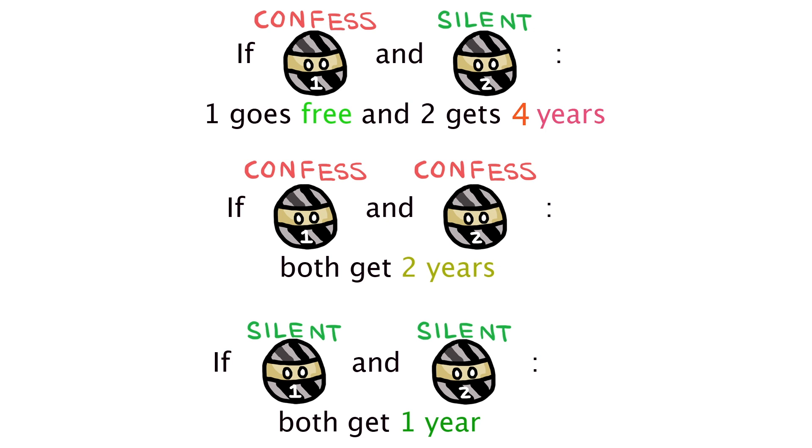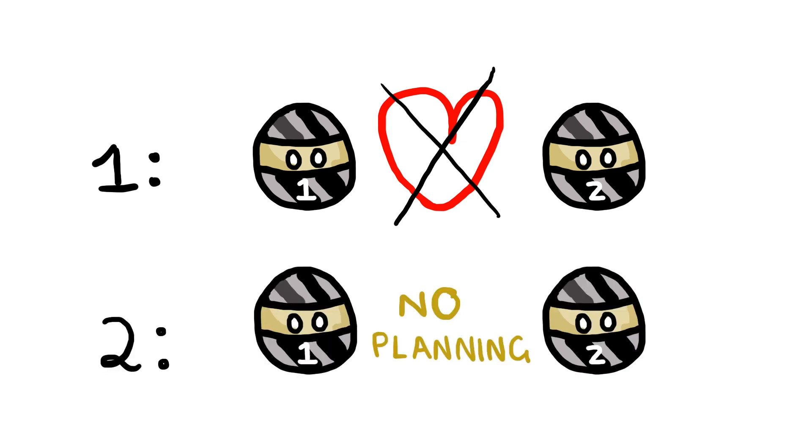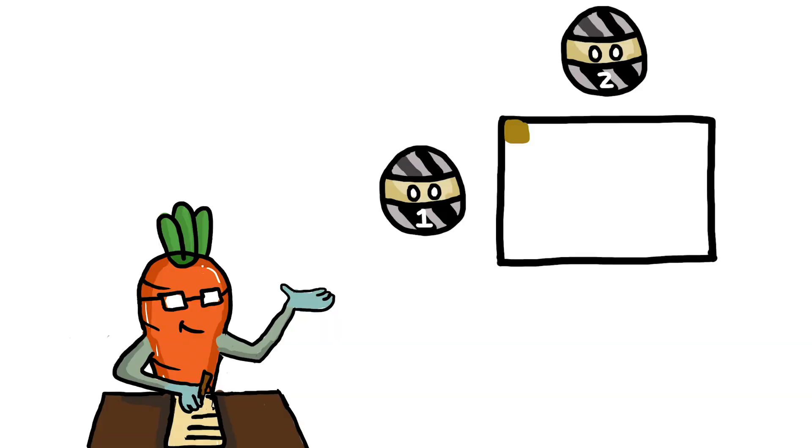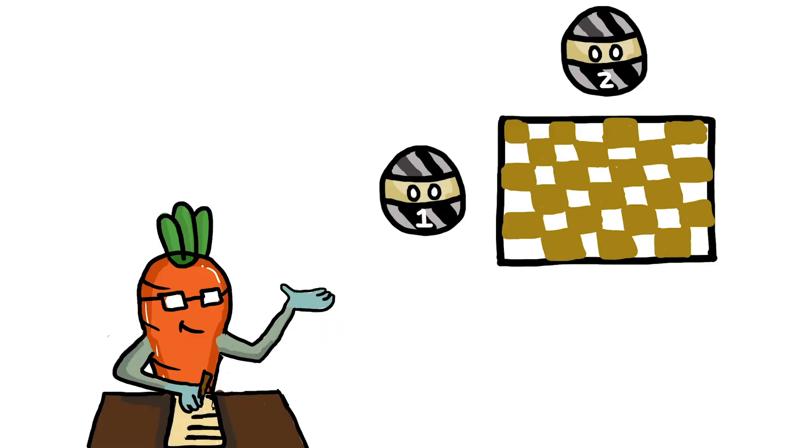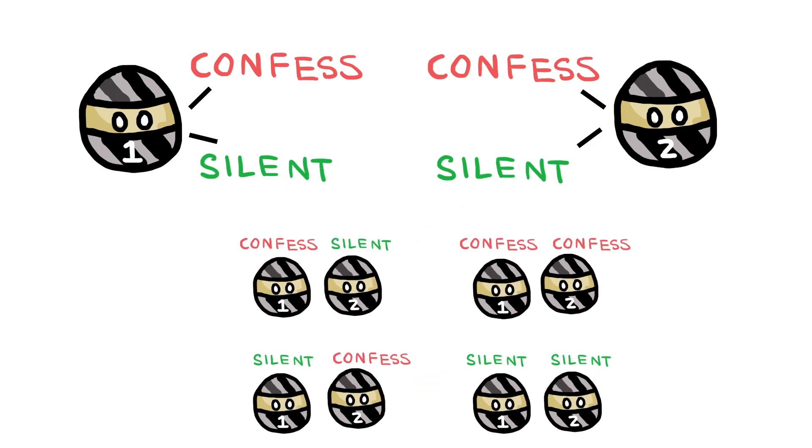Before we analyze the decisions they make, we have to assume that they don't have any personal loyalties to each other and cannot see each other's decisions. Now, let's represent the possible actions of the two criminals who are the players of this mathematical game. Since each player can make two choices, in total, there are four possible outcomes of this game.